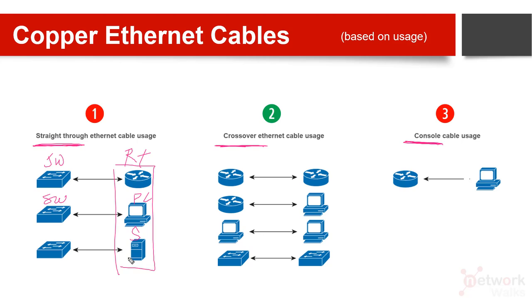These end devices are above layer three. So when one side is a switch and the other side is a router, computer, or server, we use a straight-through cable. Switch to router — straight-through. Switch to computer — straight-through. Switch to server — straight-through. Switch to printer — still straight-through.